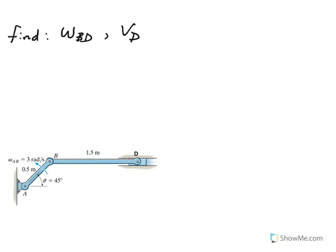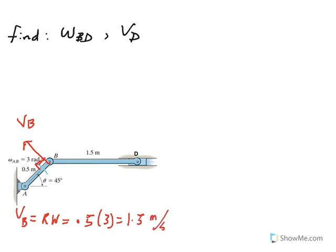Velocity of B must be 90 degrees to this crank, and it's equal to R times omega. The radius of the crank — the length of the crank — is 0.5, and omega is given to be 3 radians per second. So that becomes 1.5 meters per second.